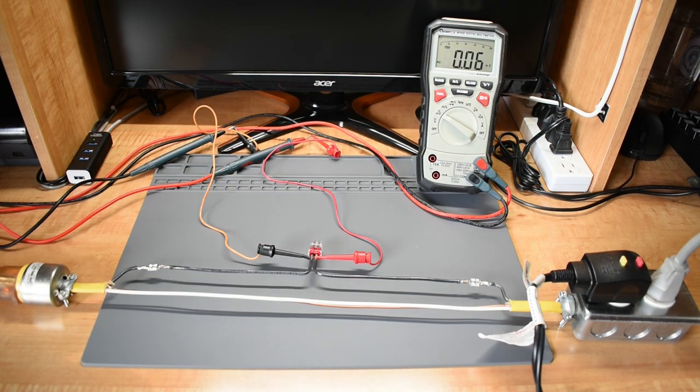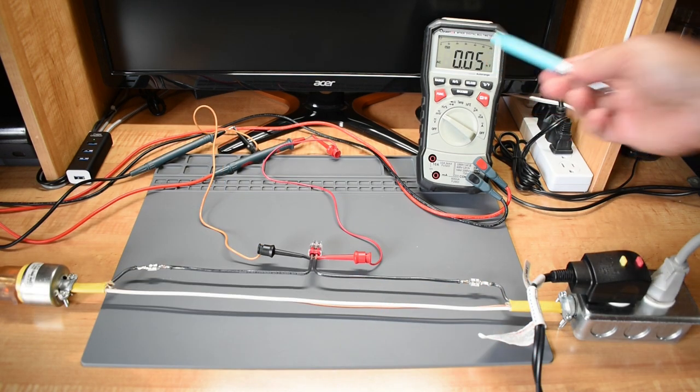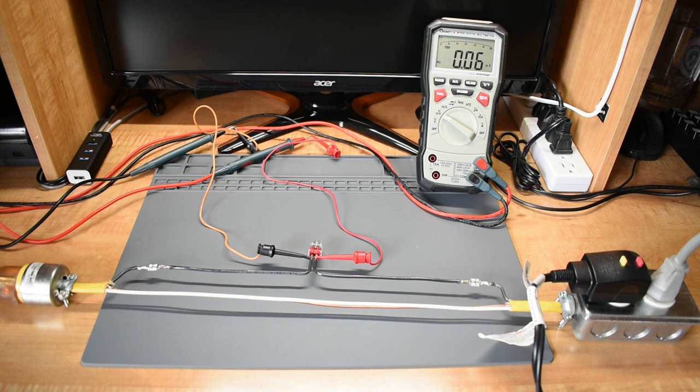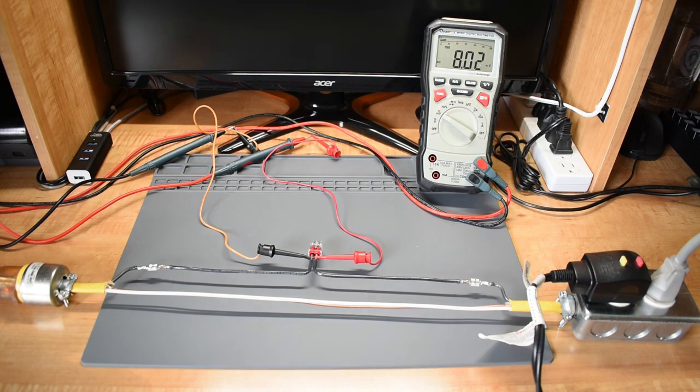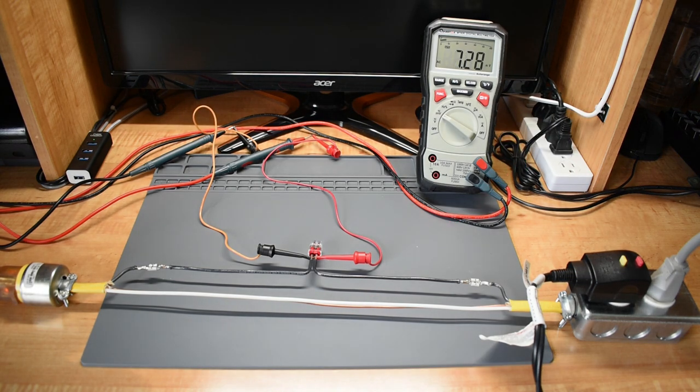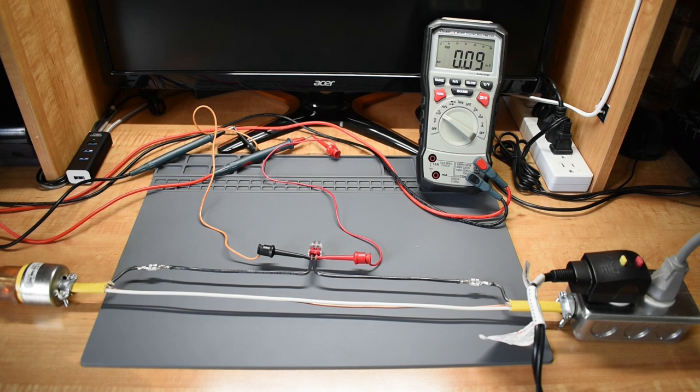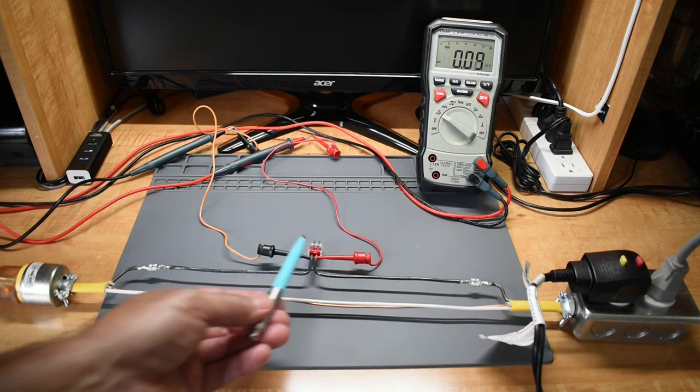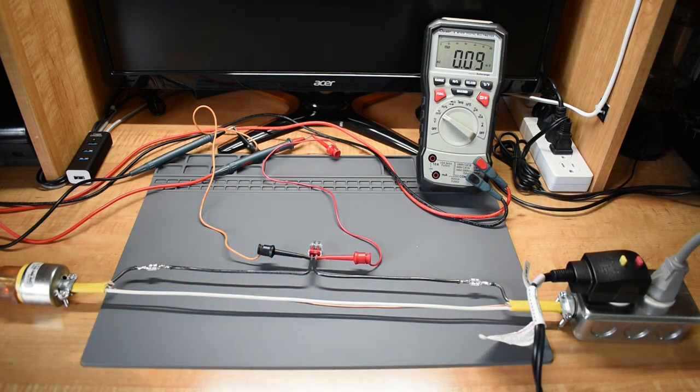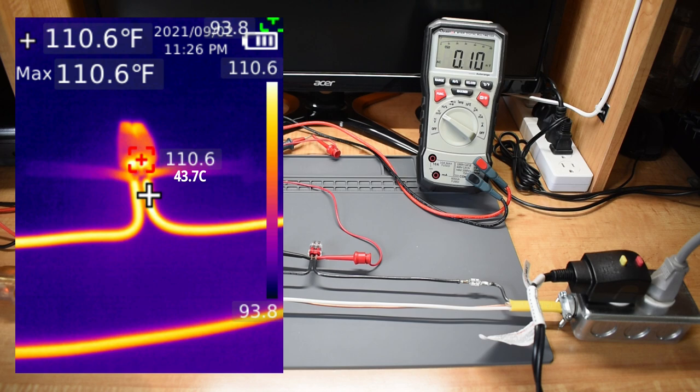We're now going to test the Ideal connector, same as before, deduct 0.05. The Ideal connector was right around 8.2 millivolts, so definitely higher, because less surface area of the wire is making contact. Right here you can see the temperature, and it's a little higher than the wire nut.